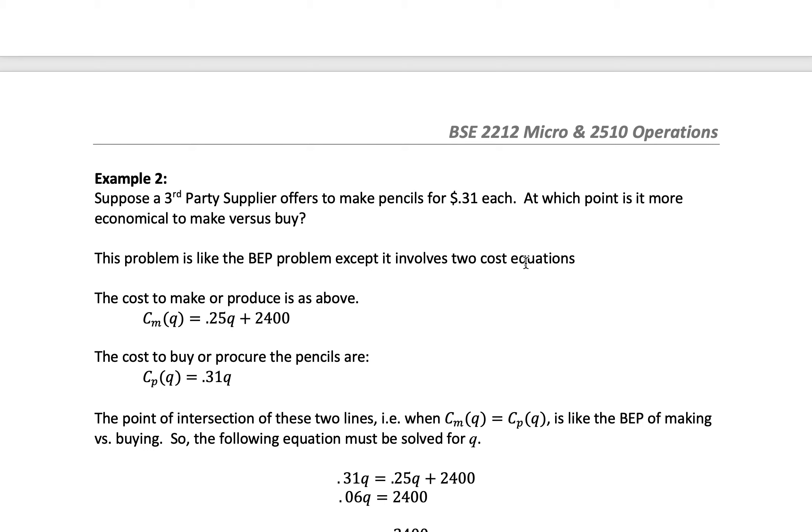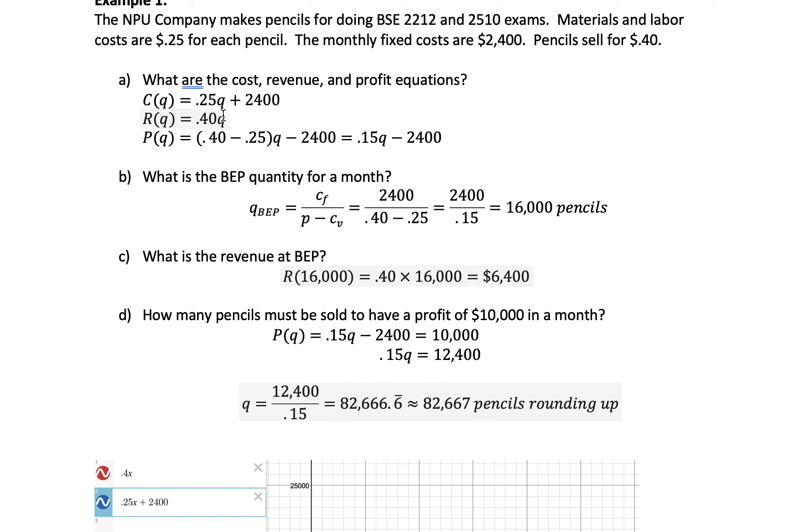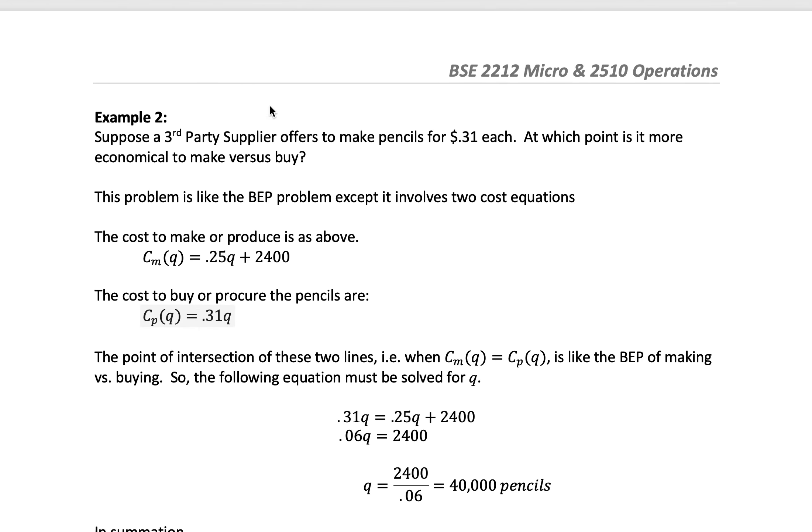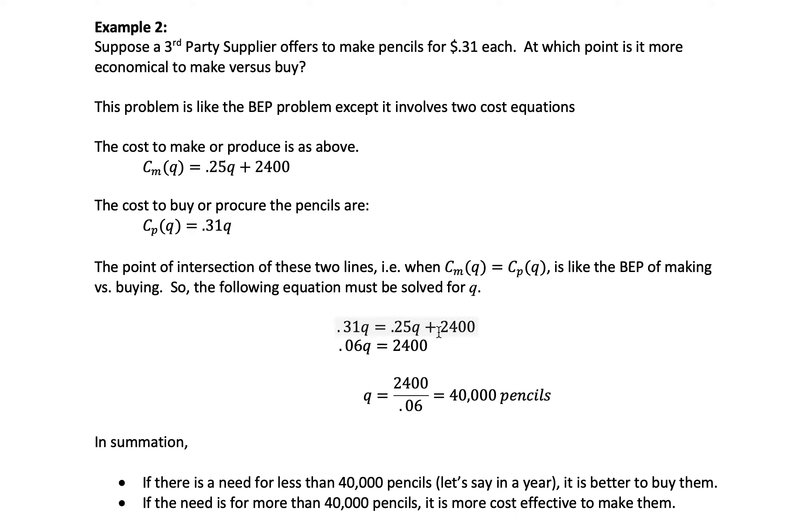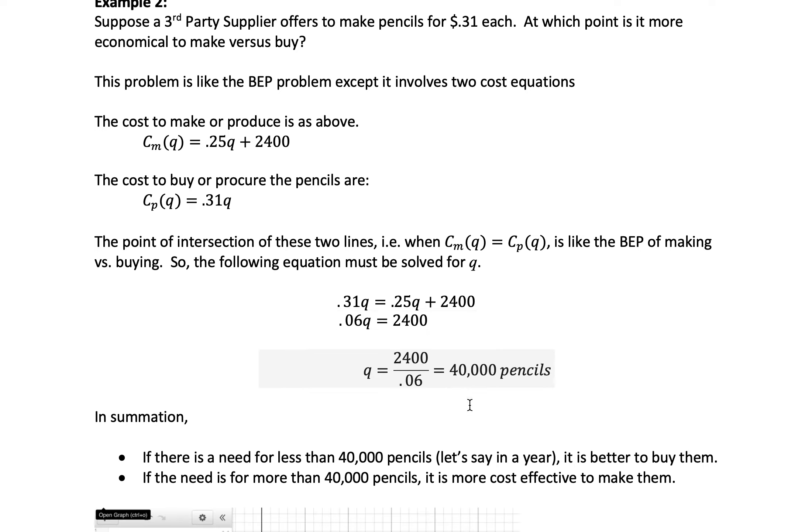This is like a BEP problem, except it involves two cost equations. We have our original cost equation for making, and the procurement cost equation C_p equals 0.31Q. There are no fixed costs because they've worked it into the price of their pencil they're selling to me. I want to find the break-even point of these two equations, where the two equations are equal to each other. I have 0.31Q equals 0.25Q plus 2,400. I subtract 0.25Q from both sides, I get 0.06Q equals 2,400, divide by 0.06 to get 40,000 pencils.